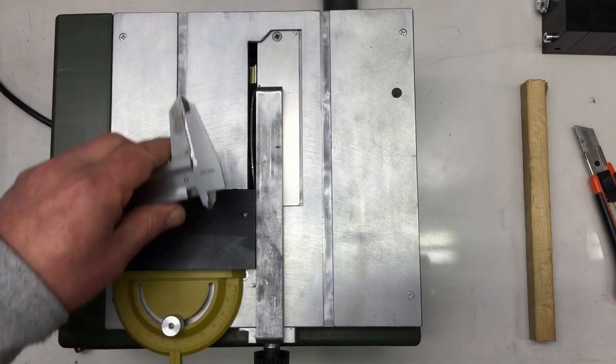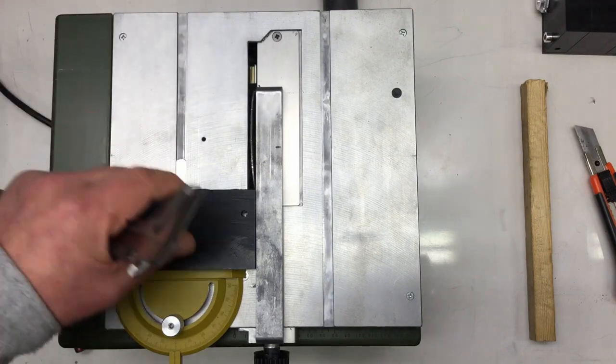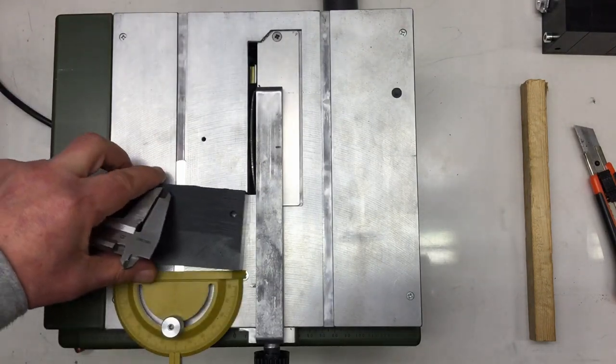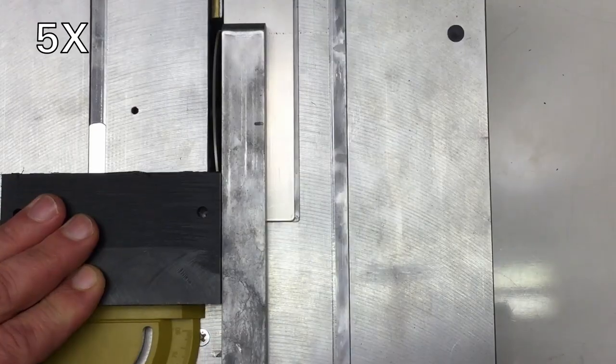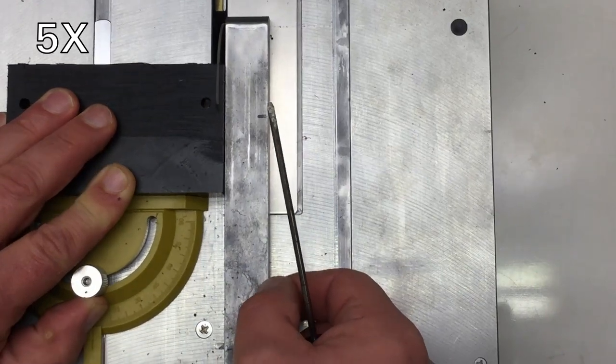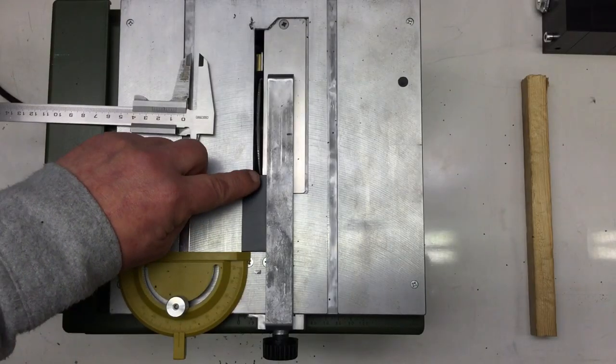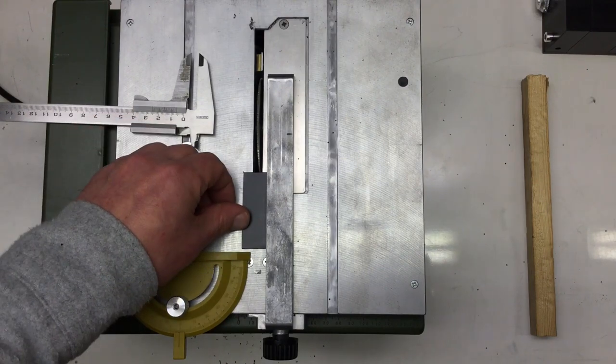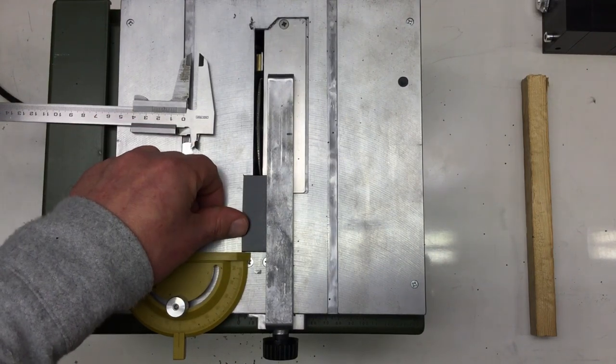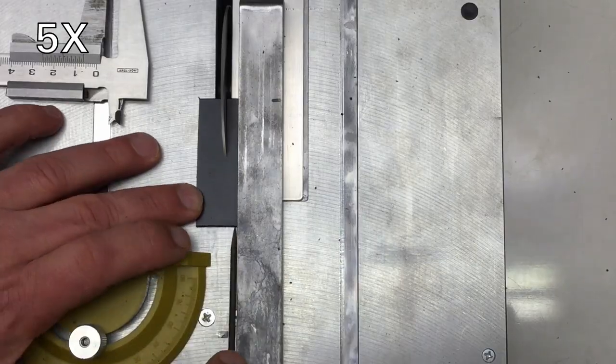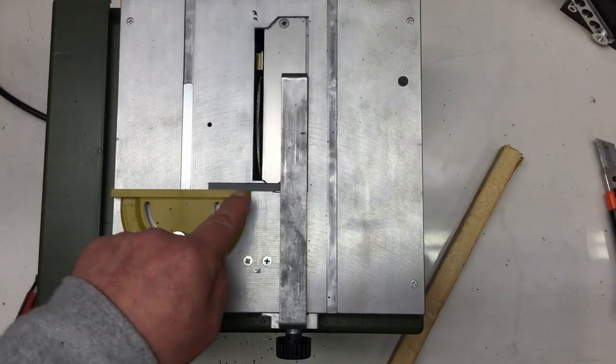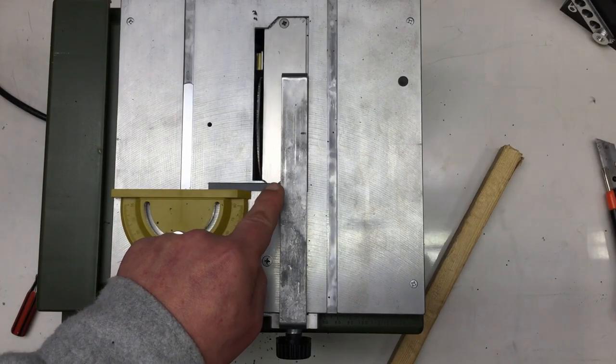First we saw off an approximately 2 millimeter wide plate here from that leftover. Then we saw off a 6 millimeter wide strip of that plate. And we shorten that strip to 17 millimeters.